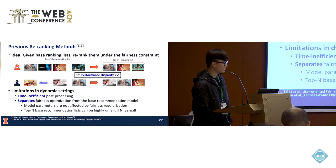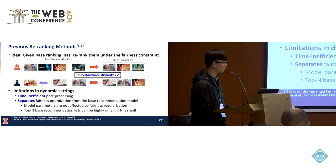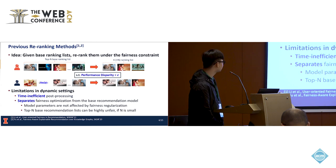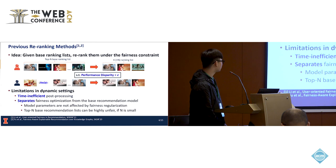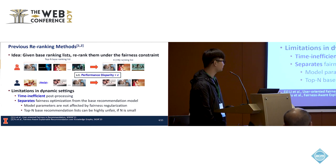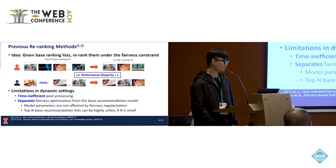I'd like to briefly talk about previous re-ranking methods and their limitations before presenting our method. Their idea is that given a base ranking list, they re-rank items under a fairness constraint — specifically, selecting K items from the top-N base ranking list such that performance disparity falls below a predefined threshold. But there are limitations: it is time-inefficient post-processing, it separates fairness optimization from the base recommender system optimization so model parameters are not affected by fairness regularization, and the top-N base list can be inherently unfair when N is small.